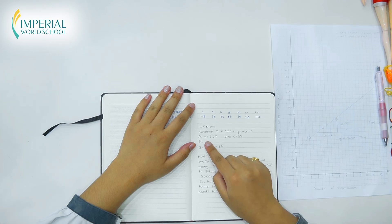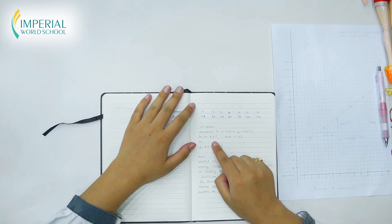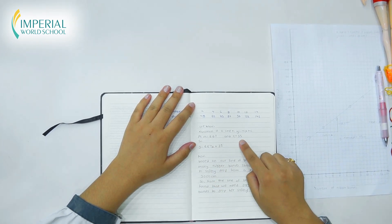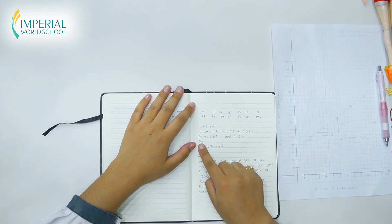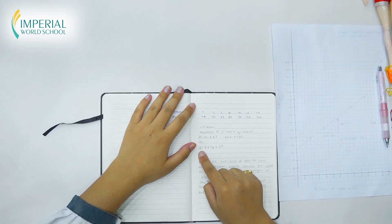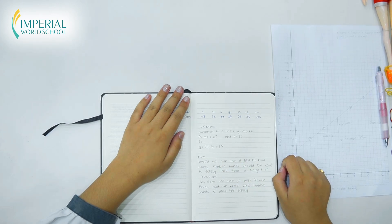Here we have found that M equals 6.67 and C, which is the Y intercept is 35. So the equation comes out as Y equals 6.67X plus 35.